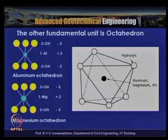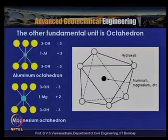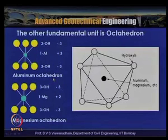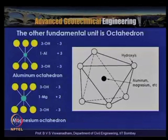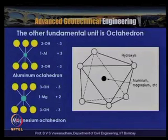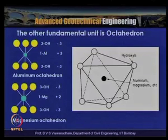The other fundamental unit is the octahedron. In the expanded side view, hydroxyls are at each corner with either an aluminium or magnesium cation at the centre. If the central cation is aluminium it is called an aluminium octahedron; if it is magnesium it is called a magnesium octahedron.